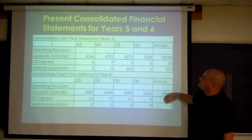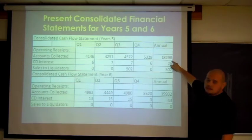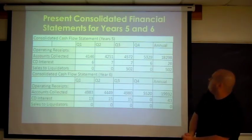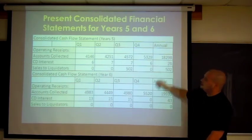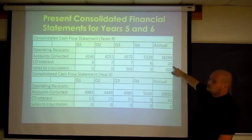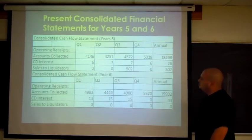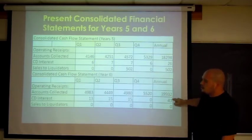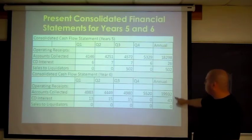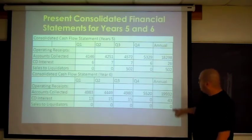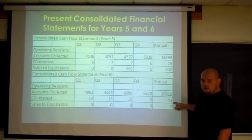For cash flows in year 5, we collected in our accounts 18 million. Our CDs was 26. Sales to liquidators, we had 500 for year 5. For year 6, our cash collected for that year was 19 million. We had CD interest, 43. And we had zero to liquidators.